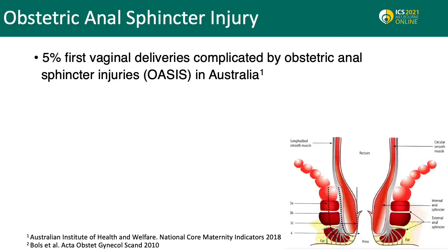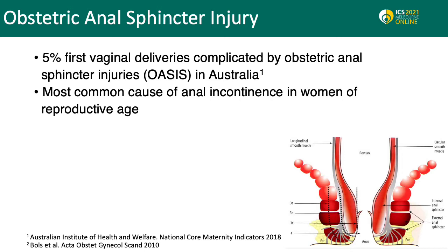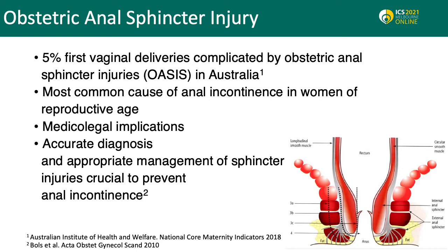In Australia, 5% of first vaginal deliveries are complicated by obstetric anal sphincter injuries. It is the most common cause of anal incontinence in women of reproductive age and can be associated with medico-legal implications related to missed and inaccurate diagnosis, or to persistent sphincter defects and incontinence symptoms even after primary repair.